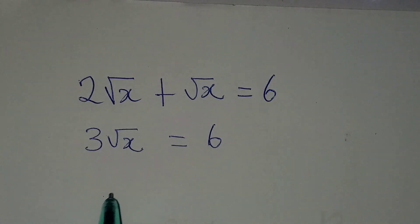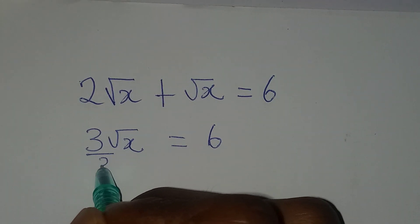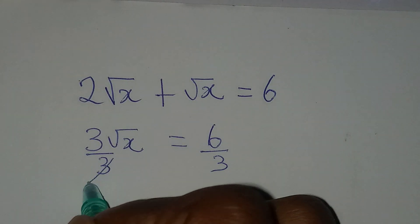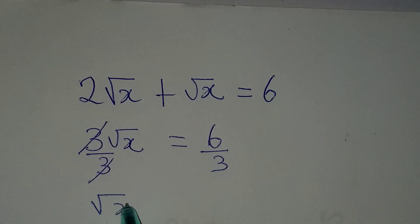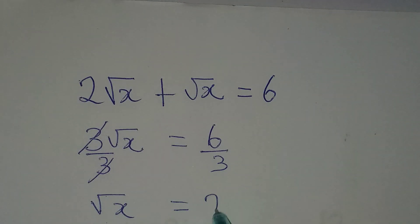And now that I'm going to look for the value of x, I will divide this by the coefficient, divide this by 3. 3 will cancel 3, right? And now, √x is equal to 6 divided by 3, which is 2.